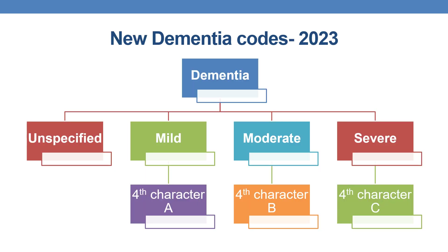In 2023 ICD-10CM, dementia codes are newly added. The newly added dementia codes specify the severity of dementia. It is categorized into unspecified, mild, moderate, and severe.